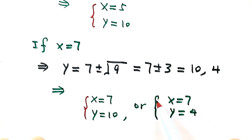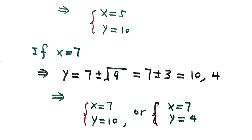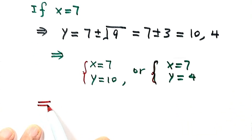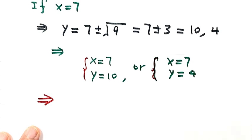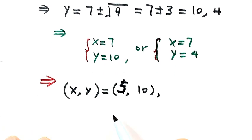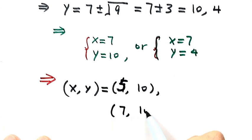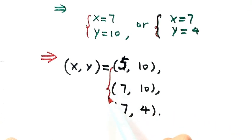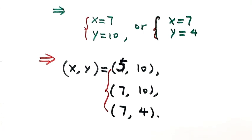So now let's combine these solutions. The positive integer solutions of the equation are: (x, y) = (5, 10); (x, y) = (7, 10); and (x, y) = (7, 4). So we have three positive integer solutions of the equation. Thanks for watching.